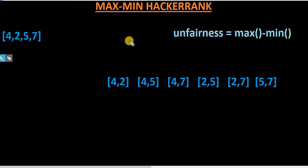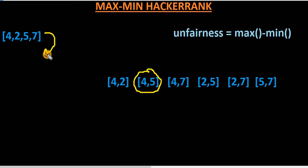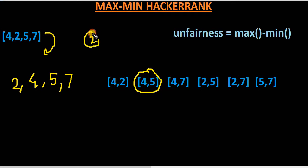A key observation: there will be minimum unfairness whenever elements are near to each other — adjacent in the number system. So what we can do is sort the array, giving us 2, 4, 5, 7. Now in a sorted array, the leftmost element of any subset will always be the minimum and the rightmost element will always be the maximum.